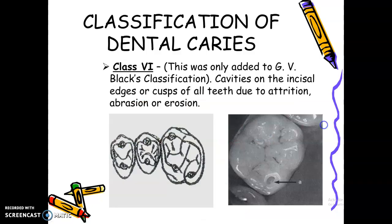We go to Class 6. This was only added to GV Black's classification. Cavities on the incisal edges or cusps of all teeth due to attrition, abrasion, or erosion — cusp tip or incisal edge. Why do we need to restore these cavities? Enamel is the hardest substance in your body. Once the dentine is exposed, it becomes cupped out. So the cavity would progress inside, and we don't want that. It would cause sensitivity and decay.